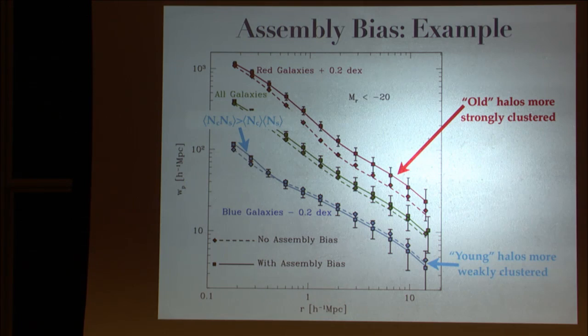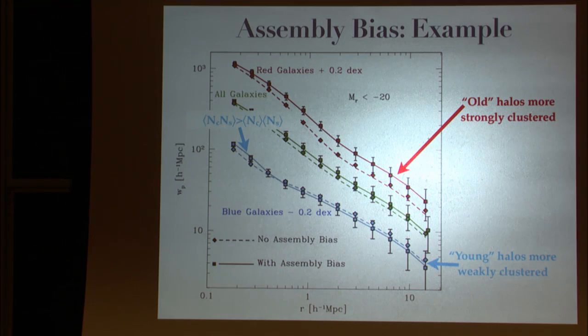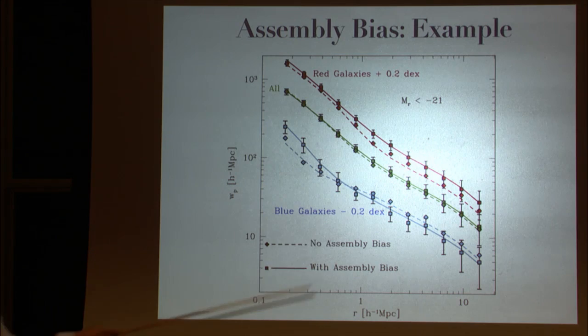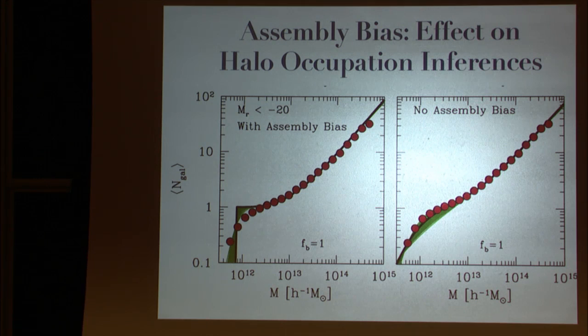They're not just drawn from independent distribution. And so you get this upturn, where in the assembly bias catalog, you have weaker clustering on large scales, and then it grows to be stronger on small scales because of this effect. And that's why I brought that up in the earlier slide. In order to predict the small scale clustering, you need to know what the average of the number of central times the number of satellites. So now the question is, and again, I apologize if I'm brushing a little bit, and the question is, what do you get from this, from performing this exercise?